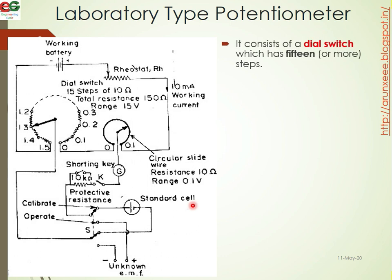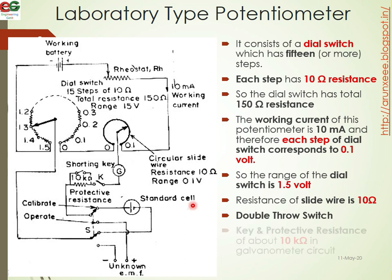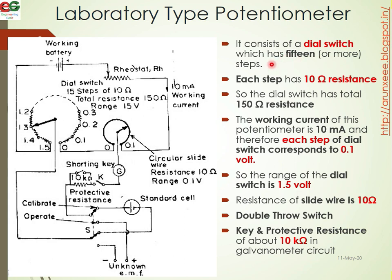Next is a laboratory type of DC potentiometer. The sliding wire has a maximum resistance of 10 ohms — note that the circular sliding wire is 10 ohms. It consists of a dial switch which has 15 steps. Each step has 10 ohms resistance, giving a total of 150 ohms resistance.